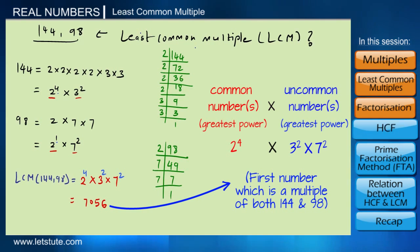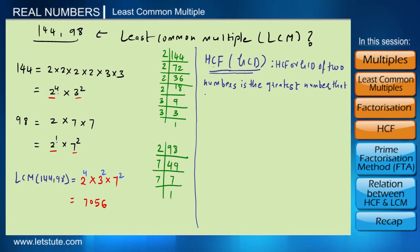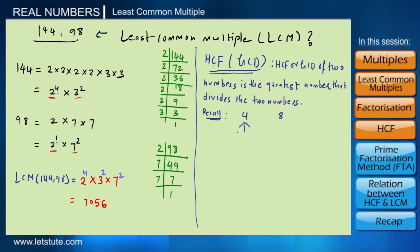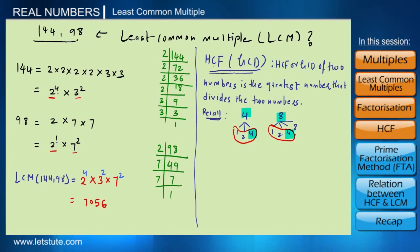By factorization we can also find the highest common factor, or HCF, also called GCD — greatest common divisor. The HCF of two numbers is the greatest number that divides both. For example, 4 has divisors 1, 2, and 4, while 8 has divisors 1, 2, 4, and 8. The common divisors are 1, 2, and 4, and since 4 is the greatest, it is the HCF of 4 and 8.